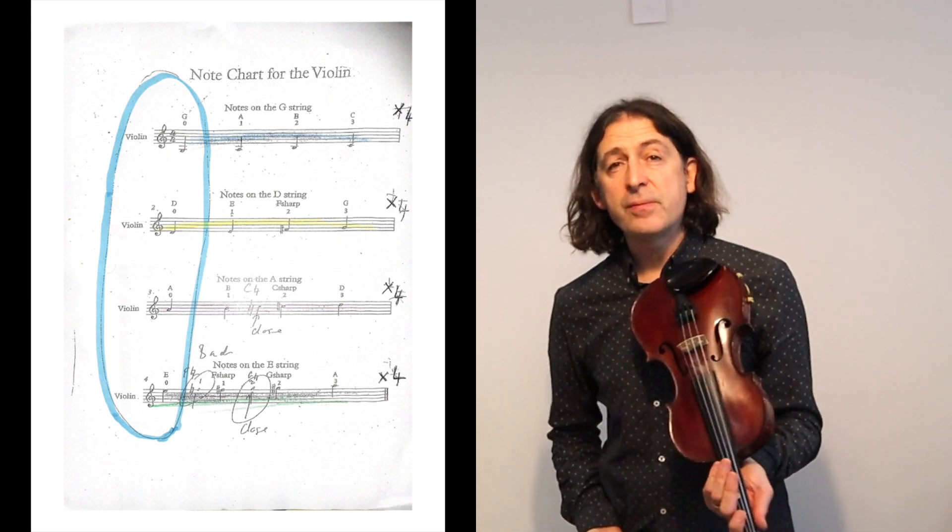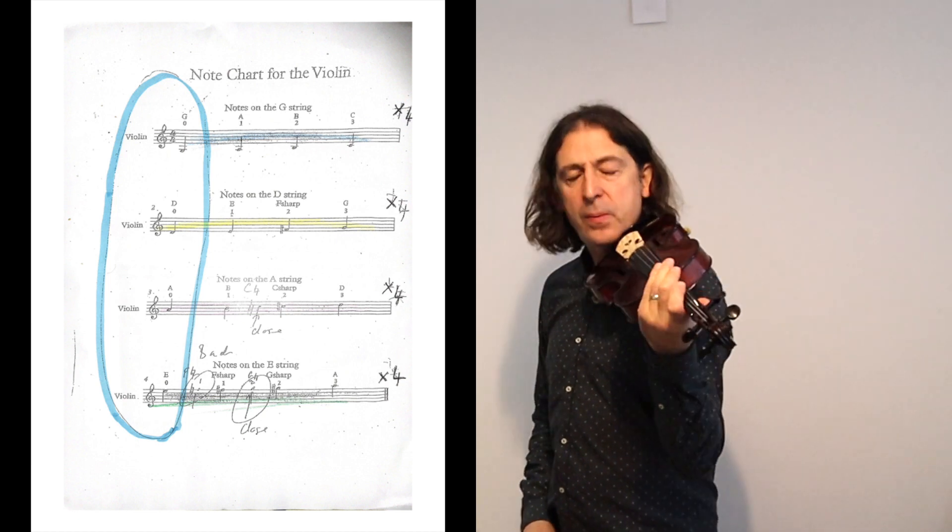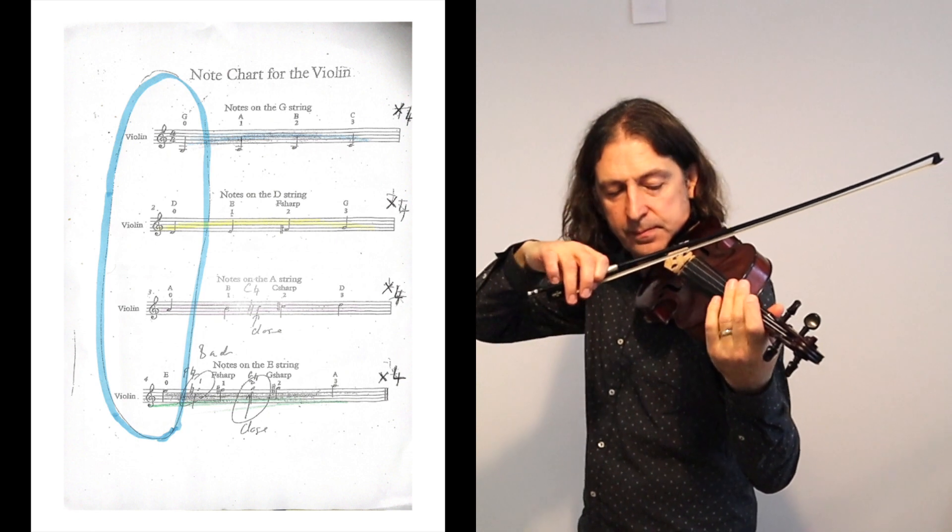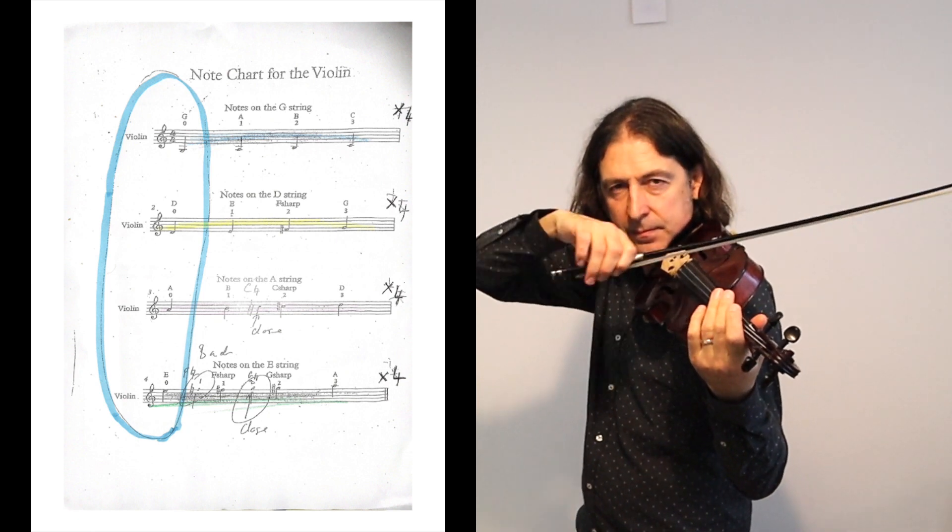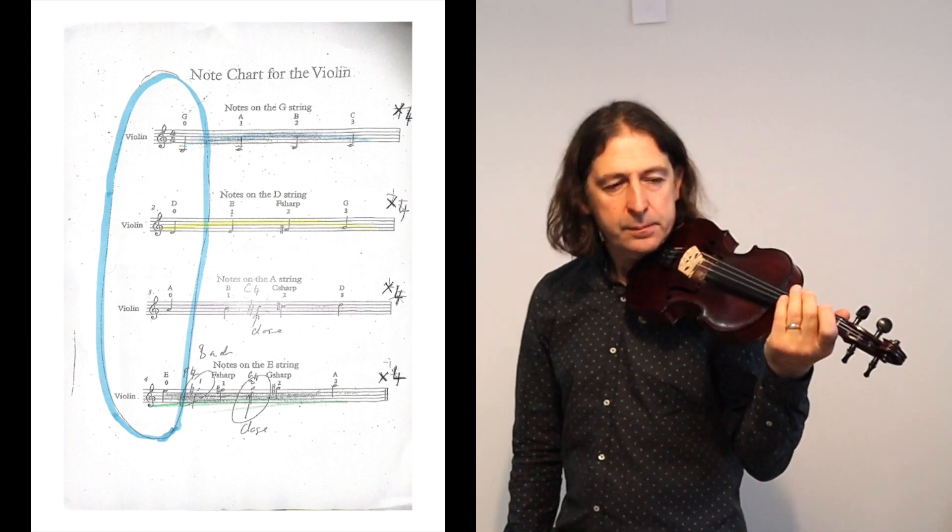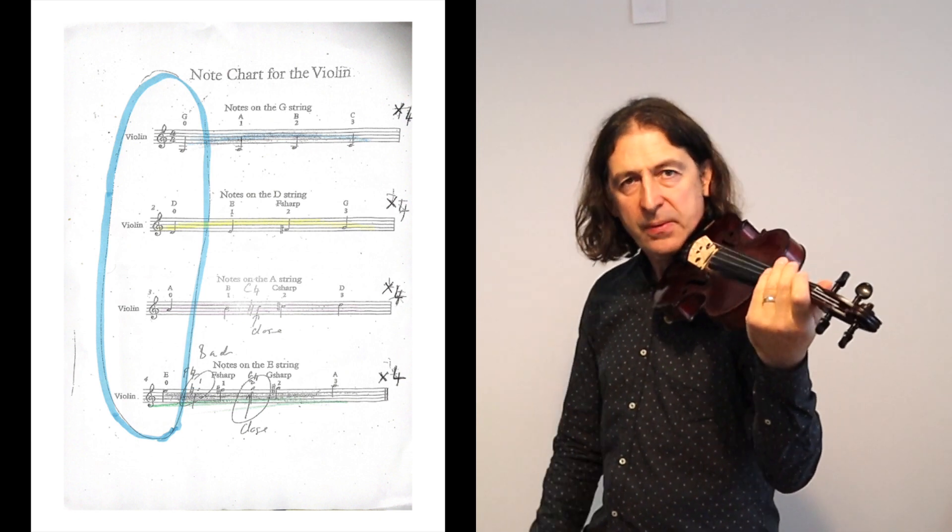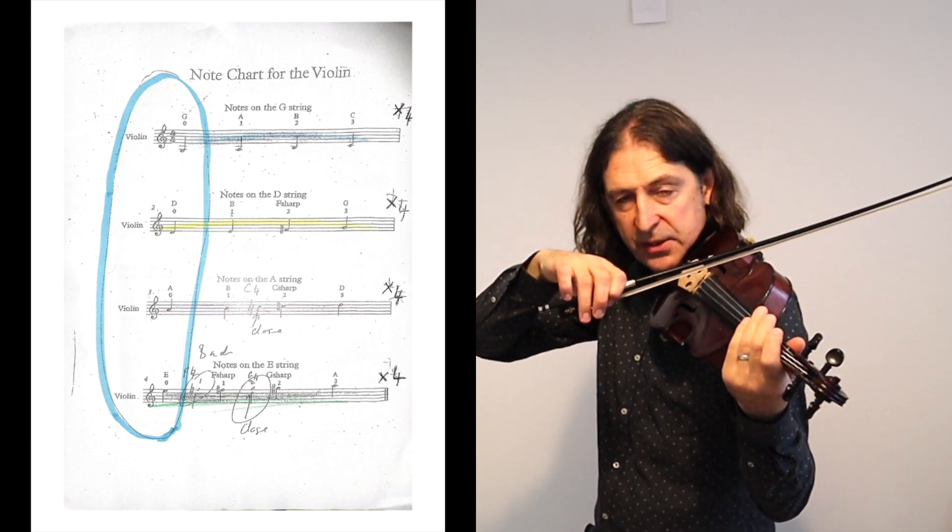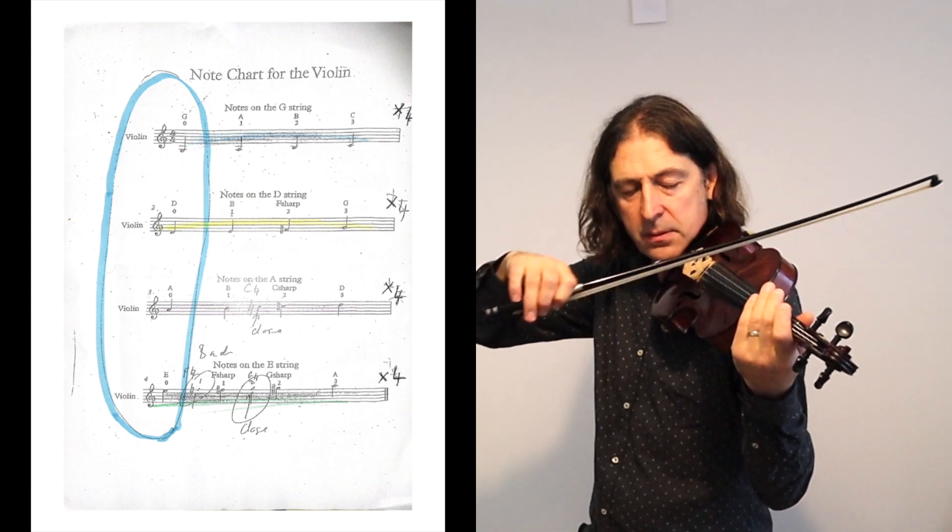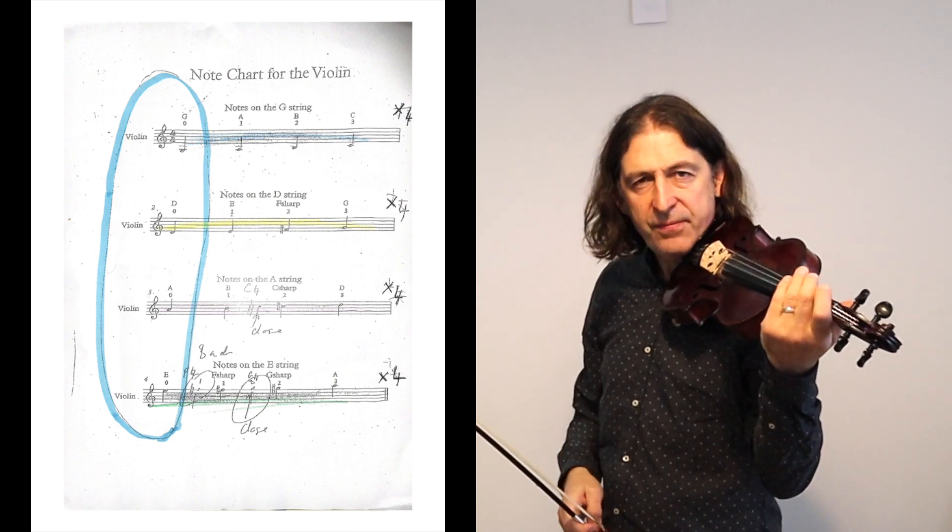What we would like to end up with is for you to play these notes all legato with a nice big sound and lots of bow. But in order to get there, we're going to play short notes first. Do a little down bow and stop your bow, then up and stop, then down and then up. Do that for a while.